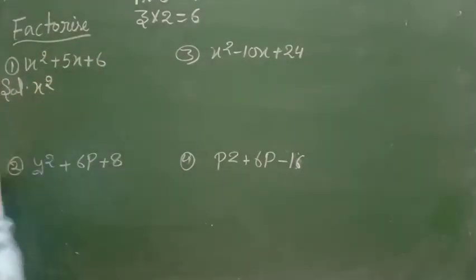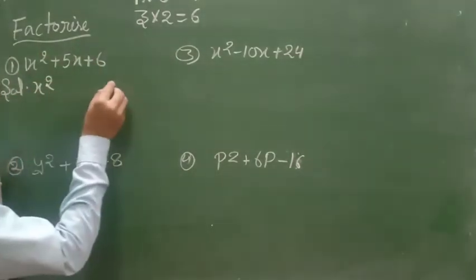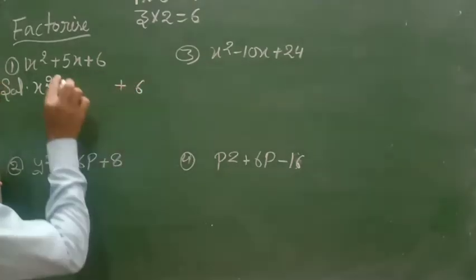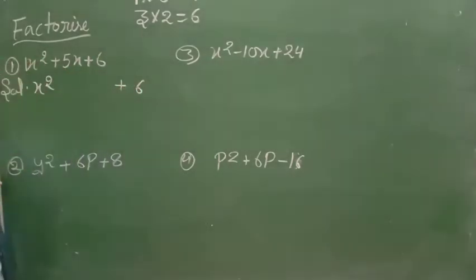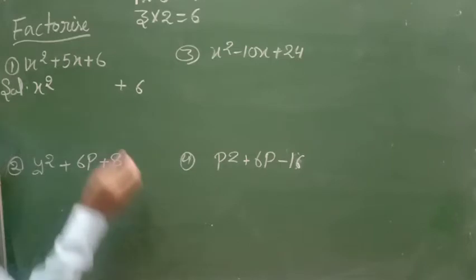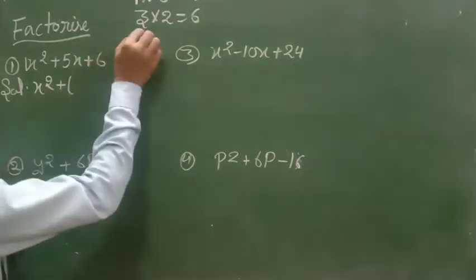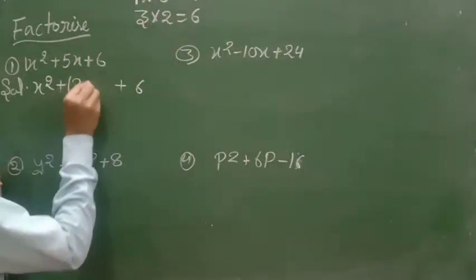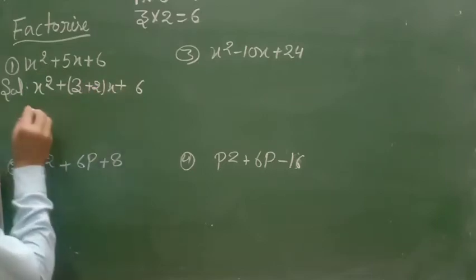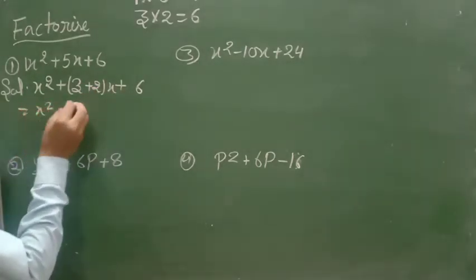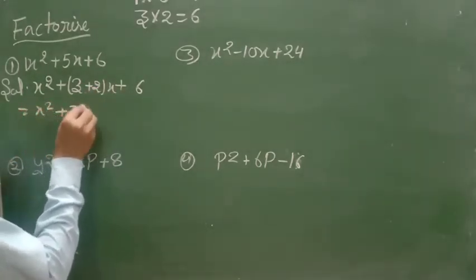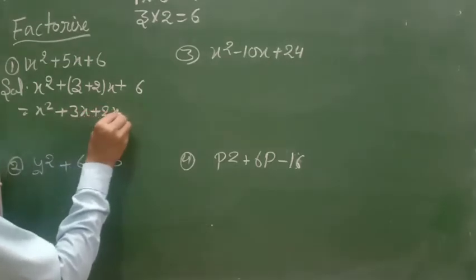So you will write here: x². In place of 5, you will write 3 plus 2. That is x² + 3x + 2x + 6.